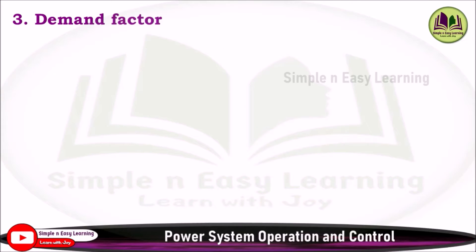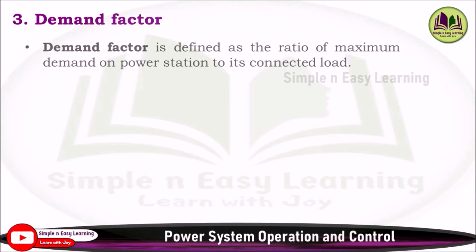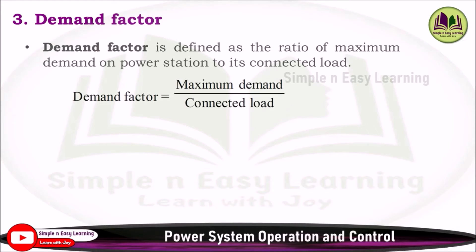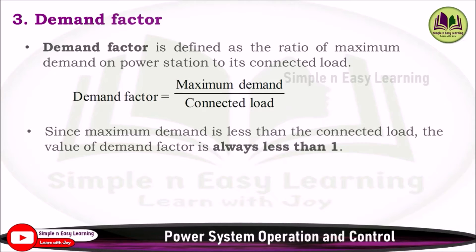Third: demand factor. Demand factor is defined as the ratio of maximum demand on the power station to its connected load. The formula is: Demand Factor = Maximum Demand / Connected Load. Since maximum demand is always less than connected load, the value of demand factor is always less than 1.